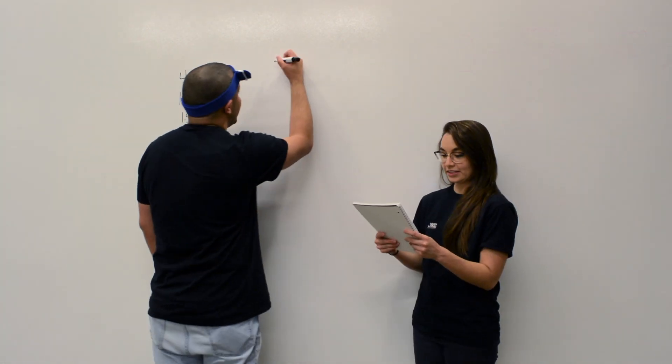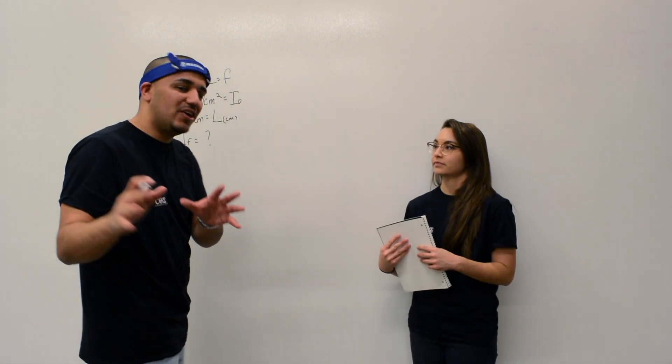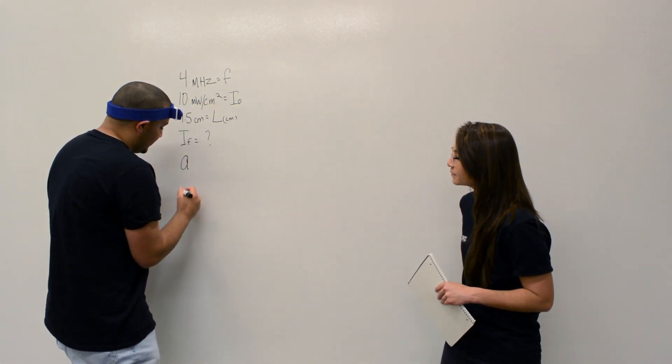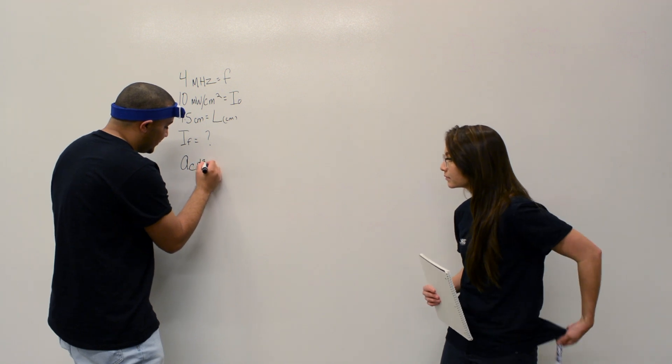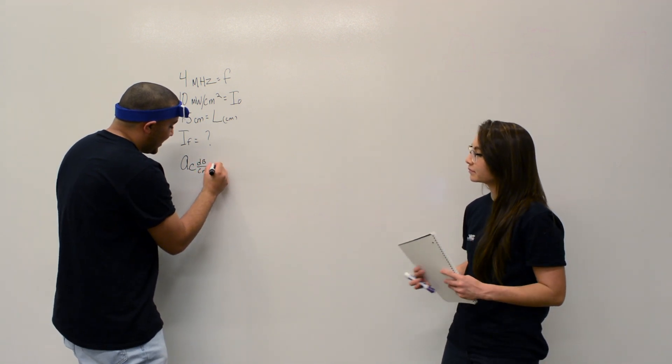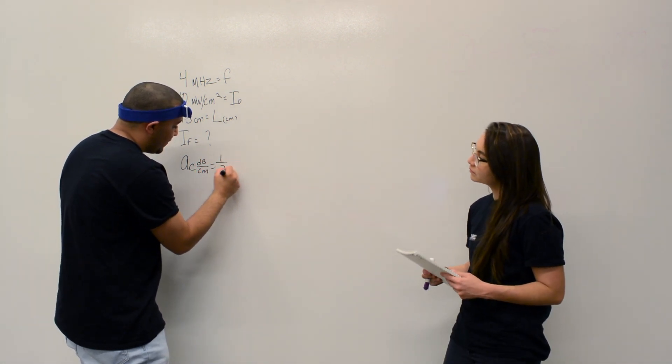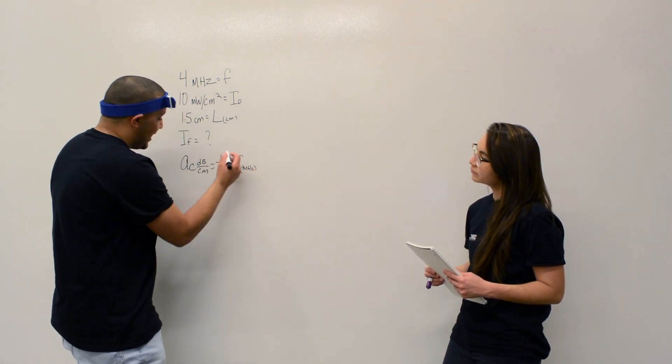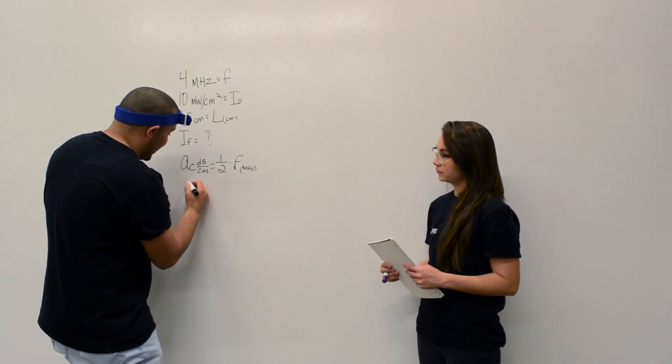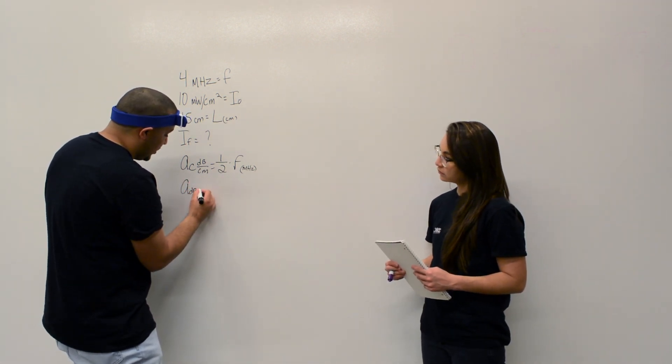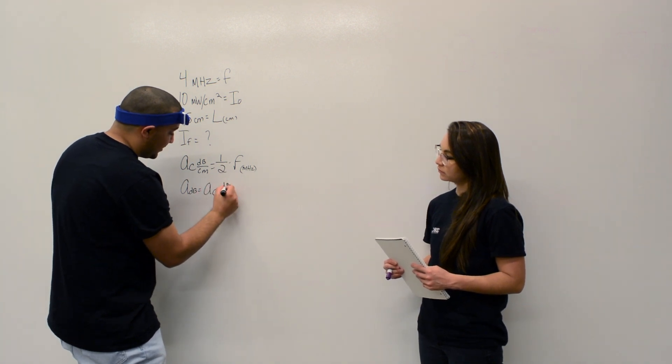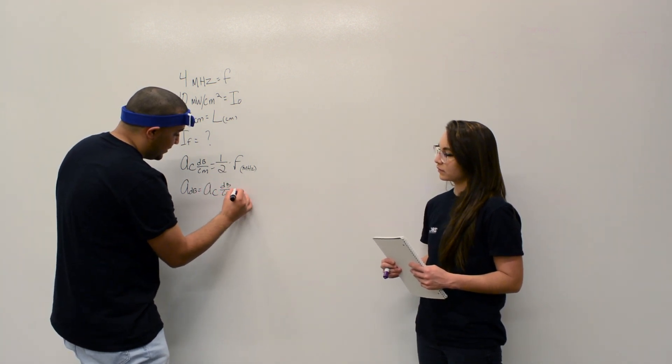All right, so we start off. First you got to do the attenuation coefficient so that you can plug it into your problem. So let me start giving you some equations. First, we're going to solve for the attenuation coefficient, which is decibel over centimeters, and that's equal to one-half times frequency. And after that, we're going to plug that into attenuation, which is just in decibels, which is equal to your attenuation coefficient in decibels over centimeter times length.